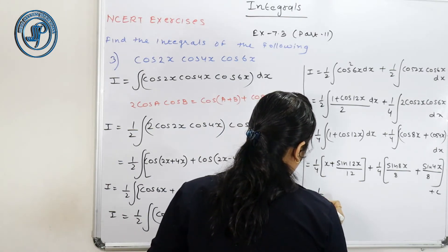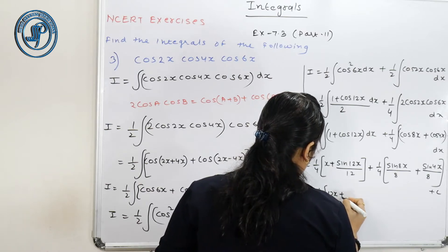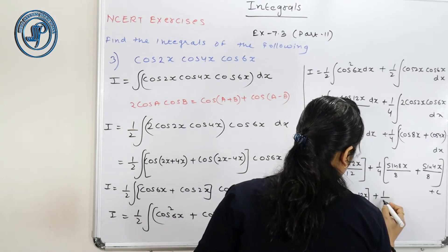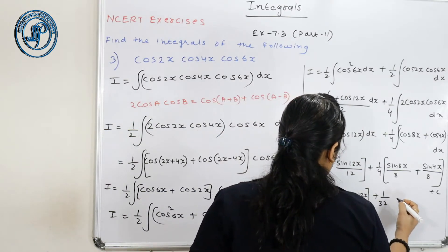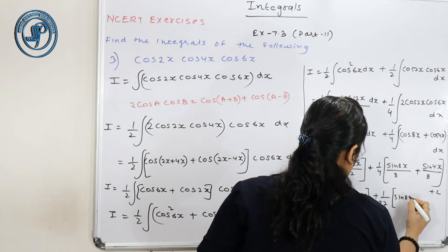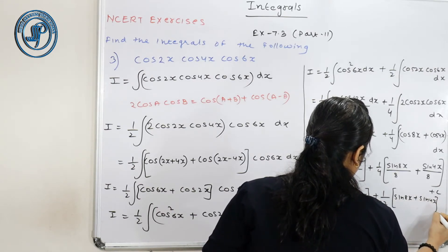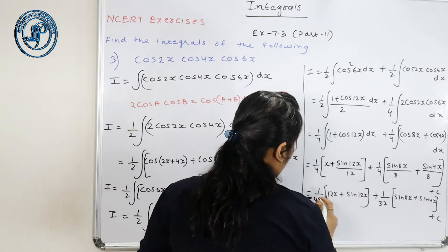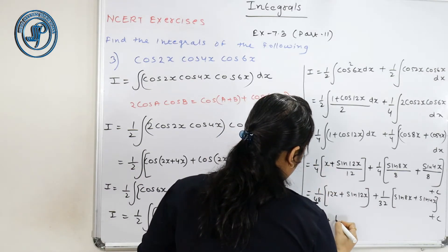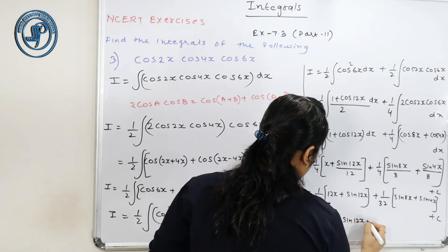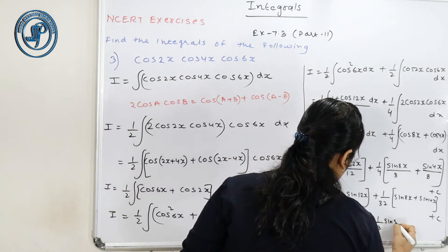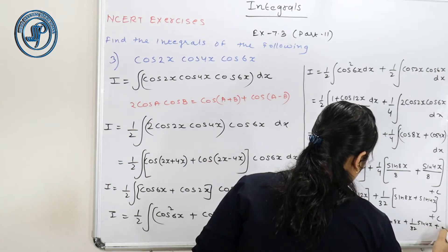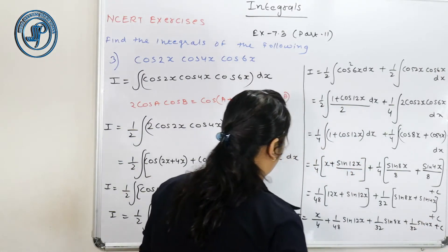Final answer: x/4 + sin(12x)/48 + sin(8x)/32 + sin(4x)/32 + C. This exercise uses trigonometric formulas extensively. Students find trig formulas difficult, but with repeated practice writing questions and formulas together, it becomes easy to apply.